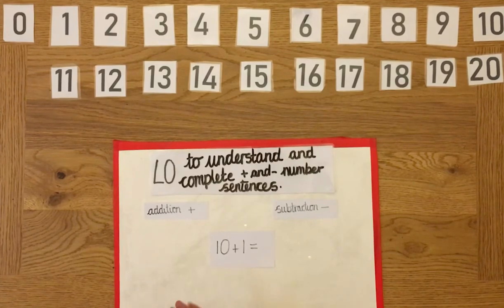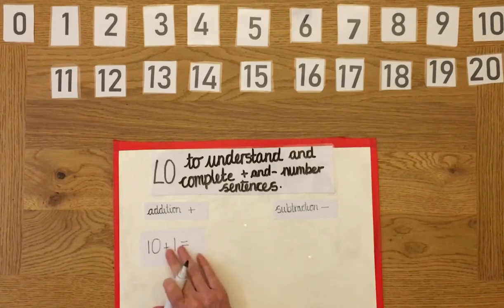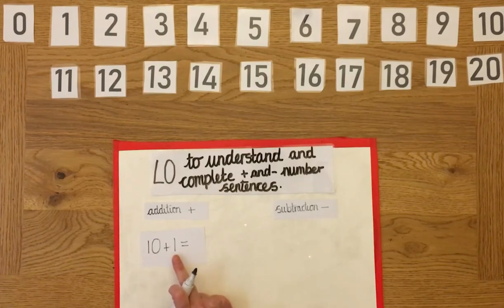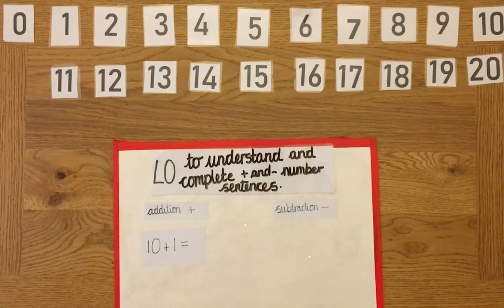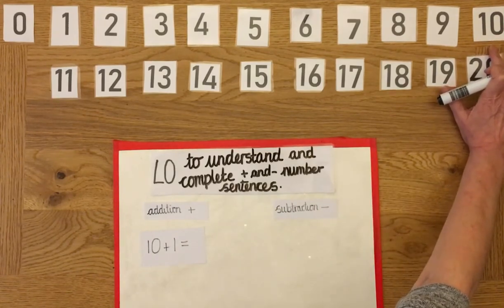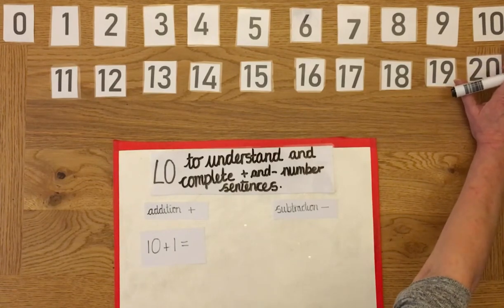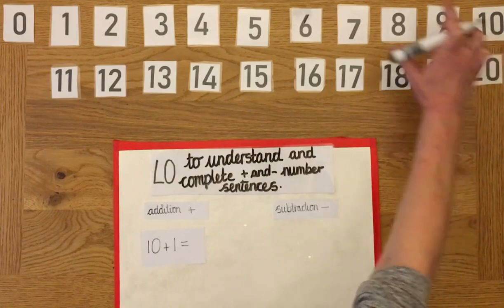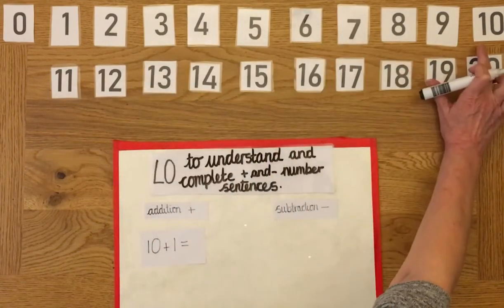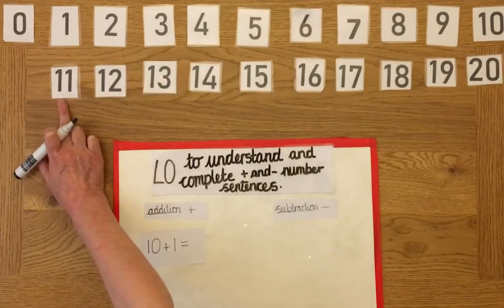Here's another one. Is this adding or subtraction? It's addition! The number sentence says ten plus one equals. I'm going to use my number track — what number do I start on? I start on ten. Ten adds one, but there isn't another number on my table after that, so I need to go down to the next line. Ten and one is eleven.